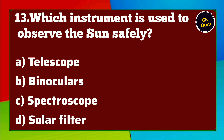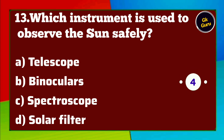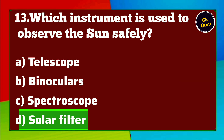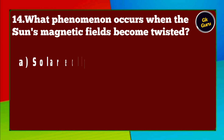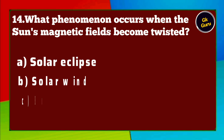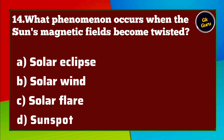Which instrument is used to observe the sun safely? A. Telescope B. Binoculars C. Spectroscope D. Solar filter. Answer D. Solar filter.